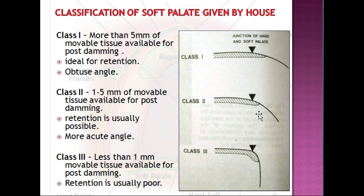Class 3 has very low attachment and the soft palate needs to travel considerably to get a proper seal with the pharyngeal wall. The Class 3 soft palate is like a curtain falling abruptly from the hard palate, and hence the posterior palatal seal area is minimal. It is very difficult to get a proper seal or retention in Class 3 patients.